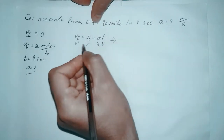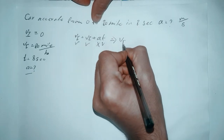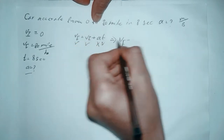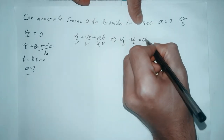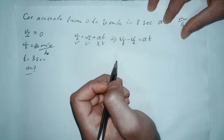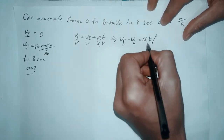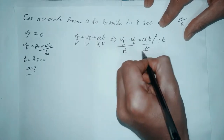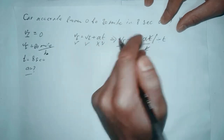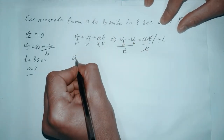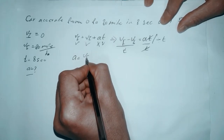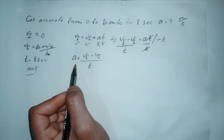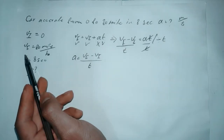We will rearrange the formula. We take the final velocity, bring the initial velocity to the other side: final velocity minus initial velocity equals acceleration times t. Then we divide both sides by t, so t cancels, and we get: acceleration equals final velocity minus initial velocity divided by t. This is the formula for acceleration.